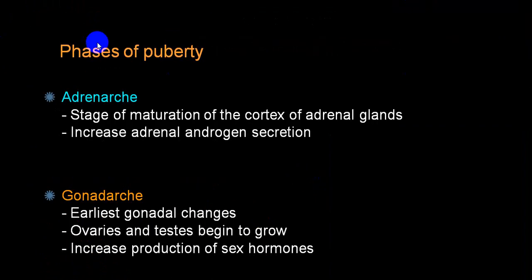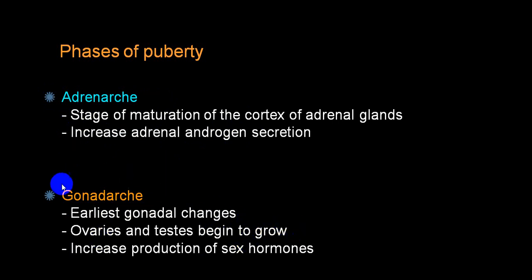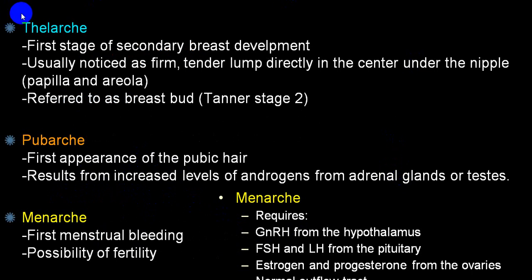There are different phases in puberty. One is called adrenarche, meaning there is maturation of the cortex of the adrenal gland, and it starts secreting androgens — we call that adrenarche. Once there are changes in the gonads — the ovaries and testes start becoming bigger and producing sex hormones — we call that gonadarche. In females, when secondary sex characters develop in the form of breast development, a firm tender lump under the nipple — called a breast bud — that is called thelarche.